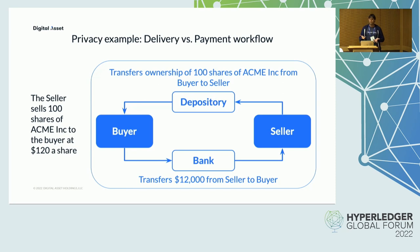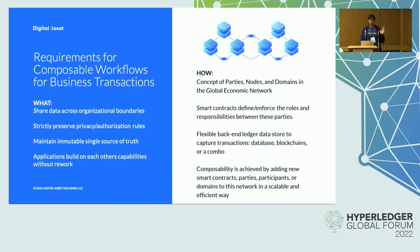Unless privacy is built into the core semantics of the system, ensuring the correct functioning of privacy restrictions is incredibly difficult — bordering on impossible. Once the issue of privacy is addressed, DLT has enormous potential for multi-party applications, as it provides a single source of truth in a trustless environment, eliminating the need for reconciliation.